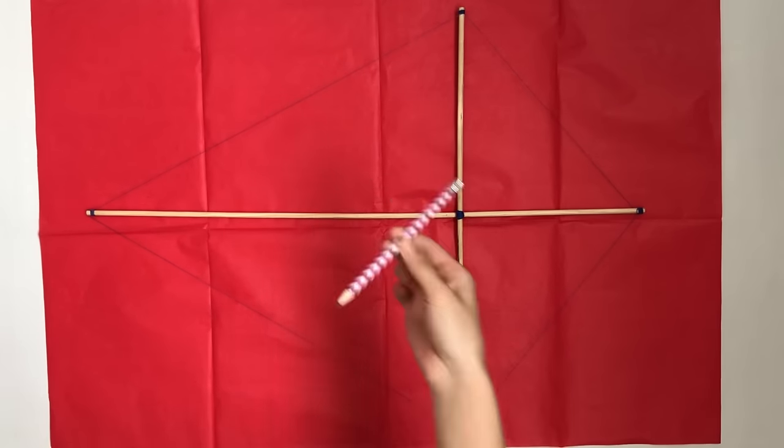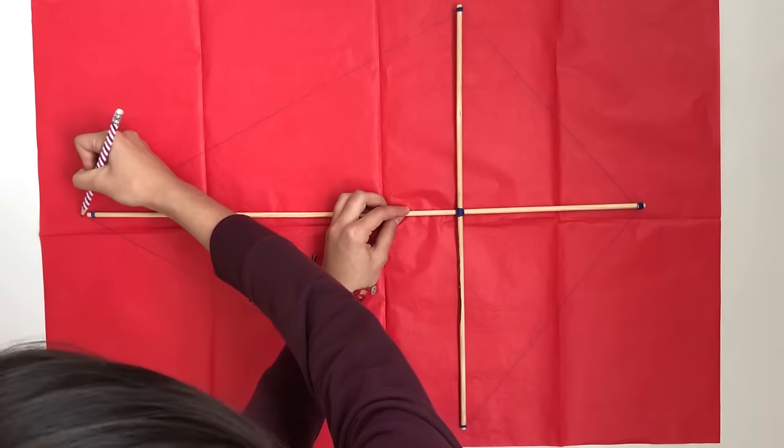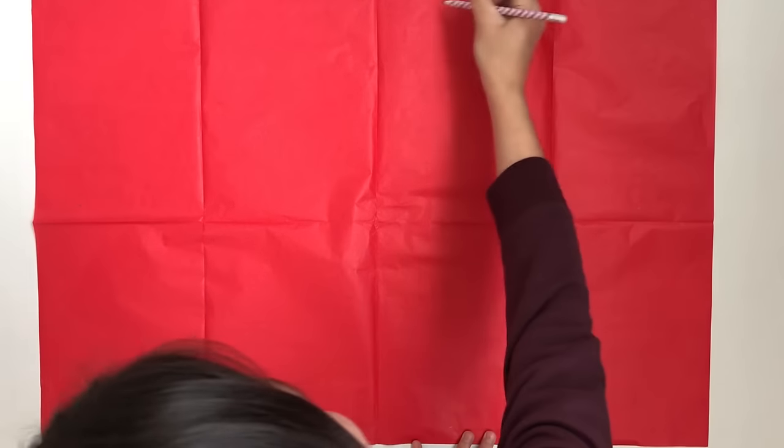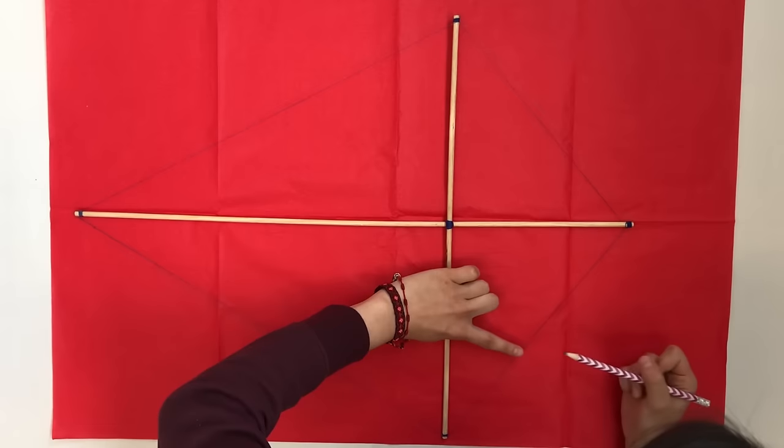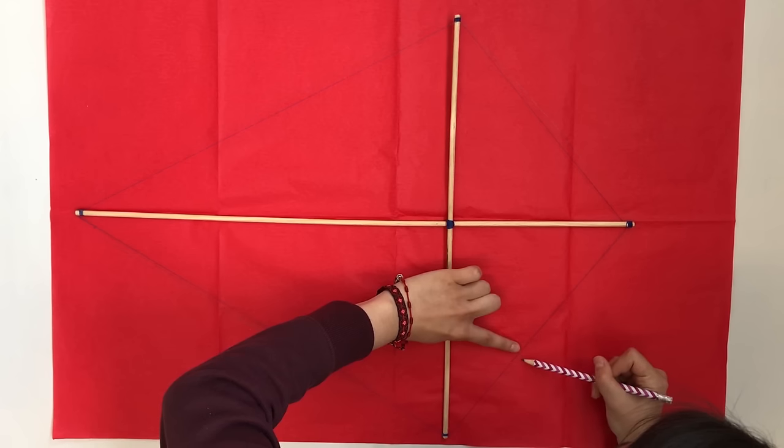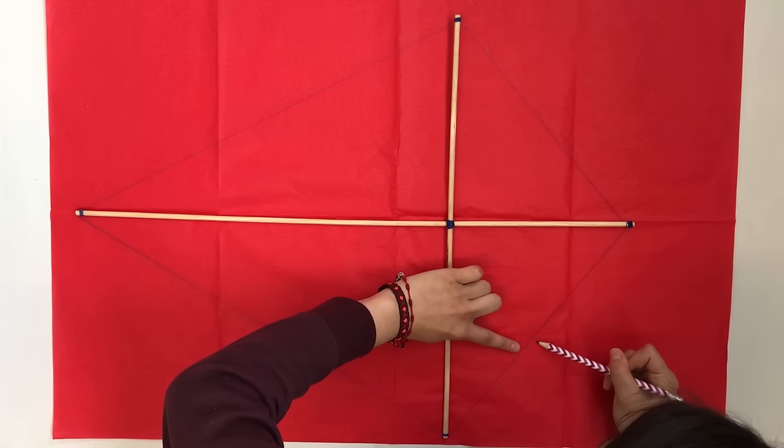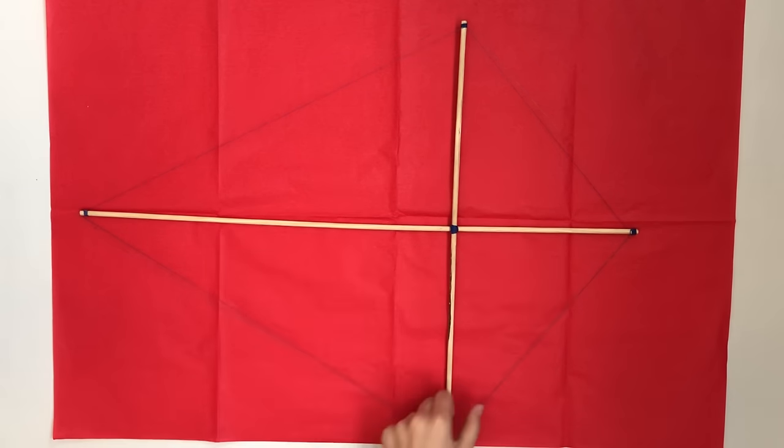With the pencil, make a point at the edge of the sticks and join the points with the ruler. When you draw the lines, be sure not to do it to the limit and leave an extra space. This will help you to glue it to the structure.